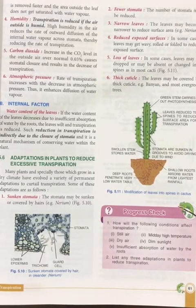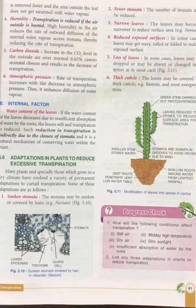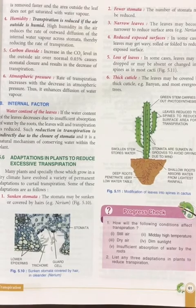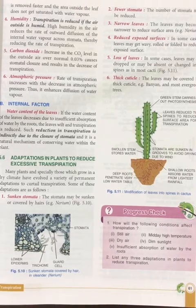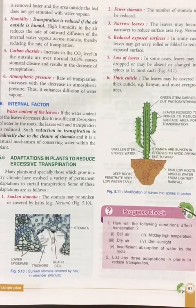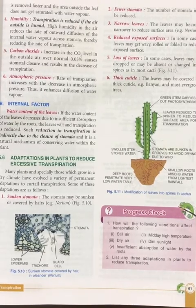The second adaptation is fewer stomata. The number of stomata may be reduced in some plants to reduce transpiration. Third is narrow leaves — the leaves may become narrower to reduce the surface area, as seen for example in Nerium.